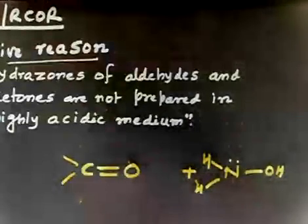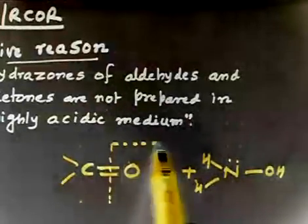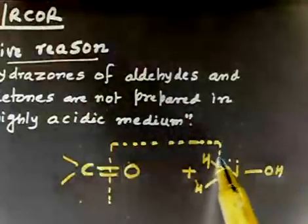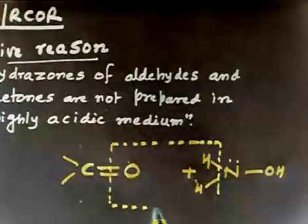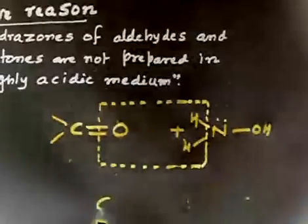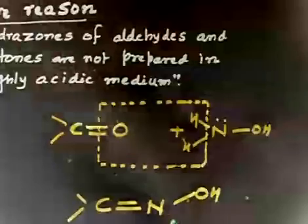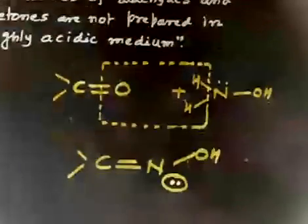what happens in this reaction is one molecule of H2O gets lost and finally we have C double bond N-OH. That is the formation of oxime. So this molecule is called oxime.